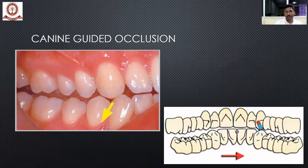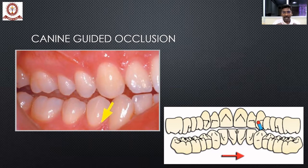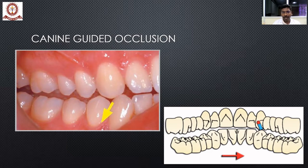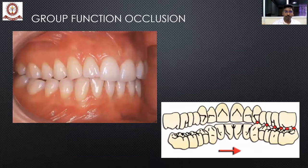Moving to dynamic occlusion — canine guided occlusion. When you clench the teeth and move the mandible to either the left or right side without opening the jaw, in this case only the maxillary and mandibular canines come into contact. The palatal slope of the maxillary canine guides the mandible in lateral position. This is called canine guided occlusion, and it exists in approximately 60 to 70 percent of the population.